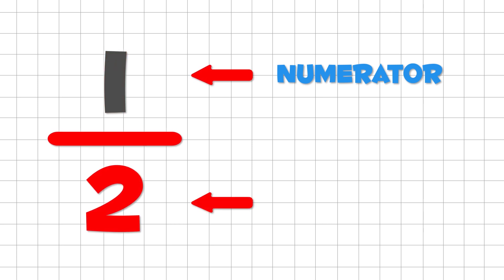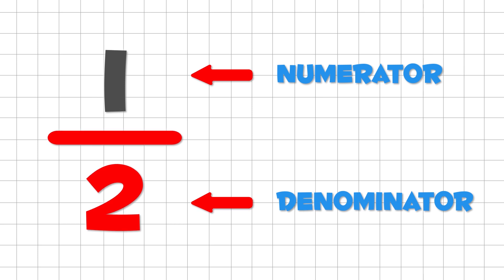The number below the line is called the denominator. Can you repeat after me? Denominator. That's it.